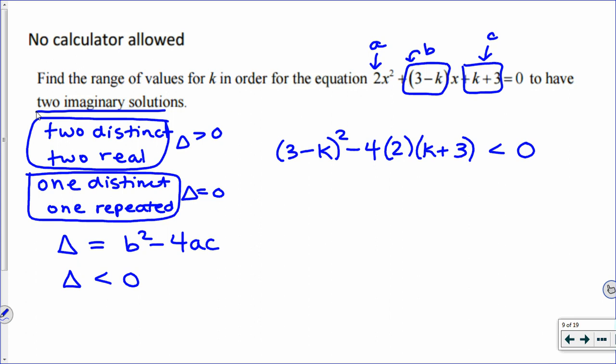So here, discriminant is less than zero. So now we're going to have to FOIL out this squared and get 9 minus 3k minus 3k plus k squared. That's this thing when you've expanded it. And then we have this is negative 8. And then distribute your minus 8. So this would be minus 8k and minus 24. Still less than zero.